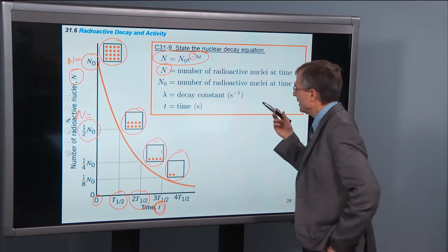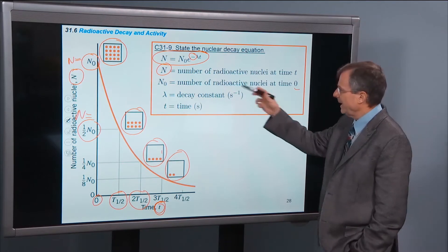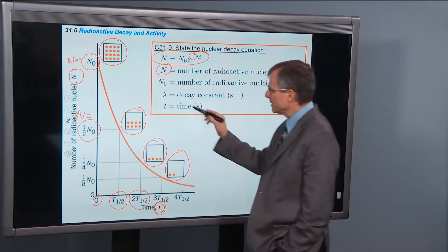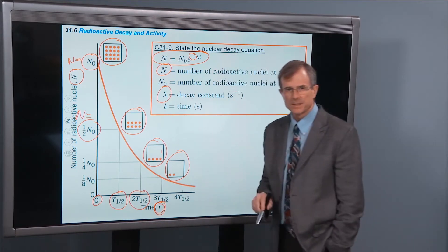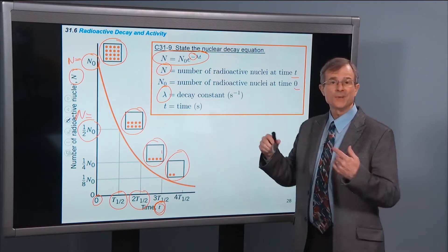N0, as we talked about, is the number of radioactive nuclei at time 0. And N is the number of radioactive nuclei at time t. Lambda is called the decay constant. It's measured in units of inverse seconds. These numbers, by the way, have no units. They're just numbers. It's not meters, not seconds, not anything. It's just a number, straight number.